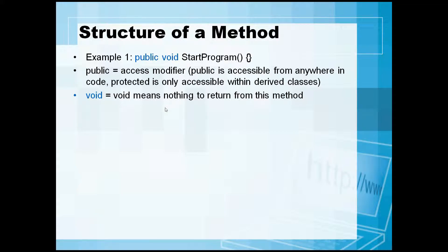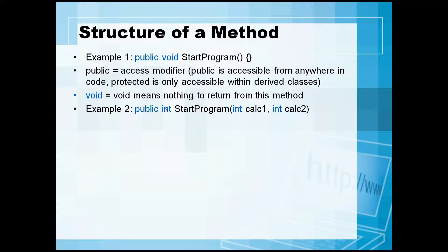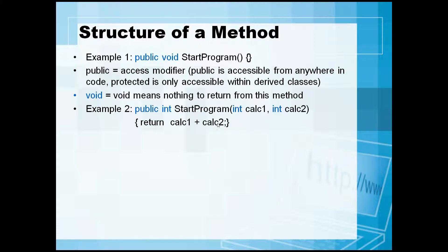Example two: 'public int StartProgram(int calc1, int calc2)'. This is a public method that takes two integer parameters. The next line shows what is going to be returned. The only thing this method does is calculate the parameters passed to it — it will add calc1 and calc2 together and return the result.